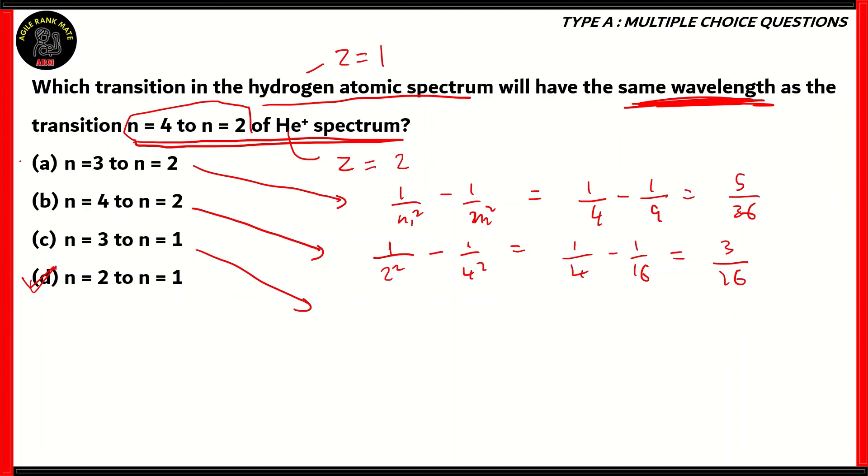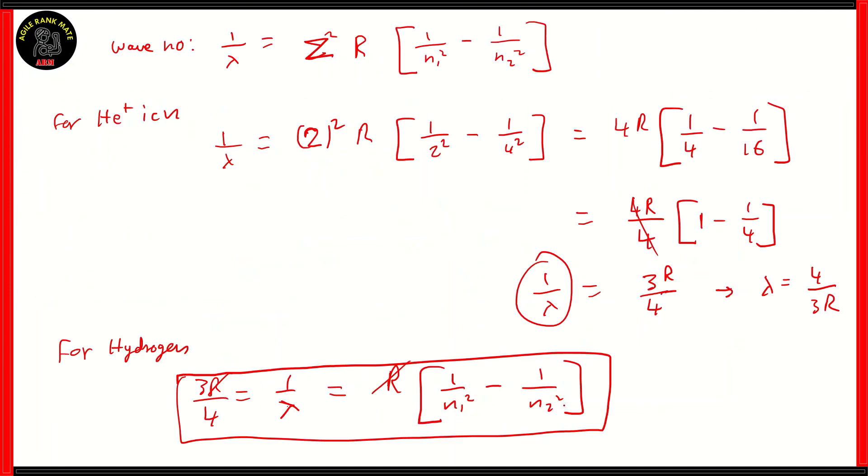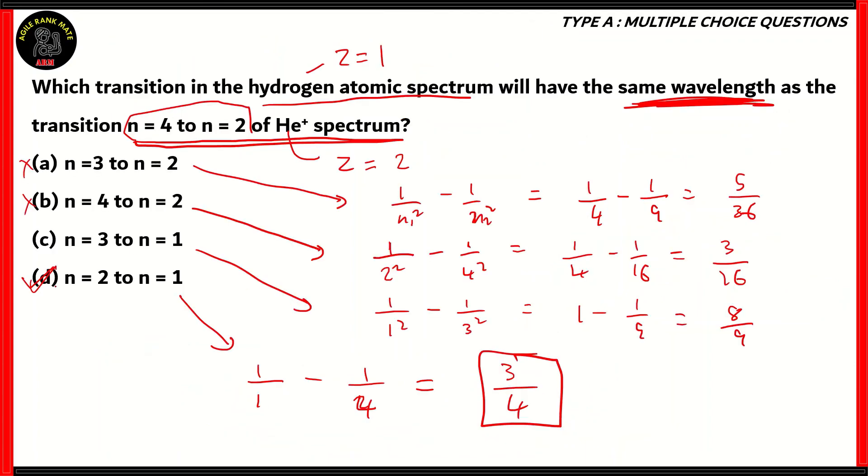Finally we have option D, which we know to be the correct one. In order to prove that, all you have to do is substitute the values: 1 by 1 minus 1 by 4, which is equal to 1 minus 1 by 4, that gives you 3 over 4. So if you put 1 and 2 over here, you'll get the same answer as the helium ion. Therefore, the correct option among the following is option D, n equals 2 to n equals 1. The transition n equals 2 to n equals 1 in the hydrogen atomic spectrum will have the same wavelength as the transition n equals 4 to n equals 2 of the helium spectrum.